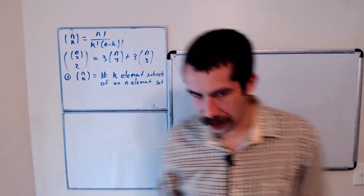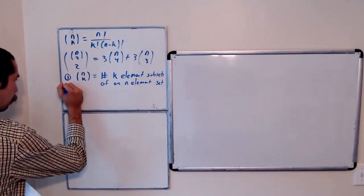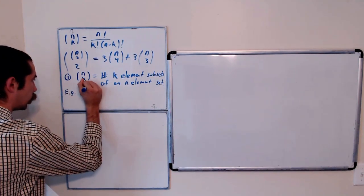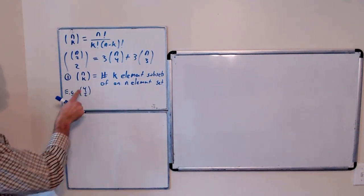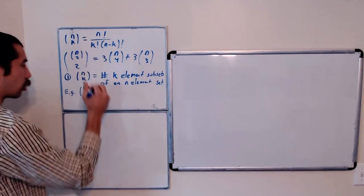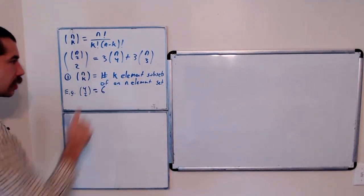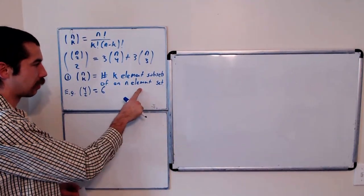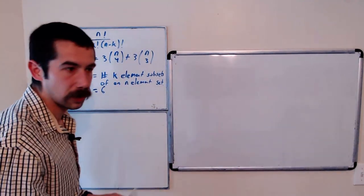Let's write out a quick example so you could believe that. For example, 4 choose 2, you could compute that using this formula, it's 6. But let's list out all 2 element subsets of the numbers 1 through 4.